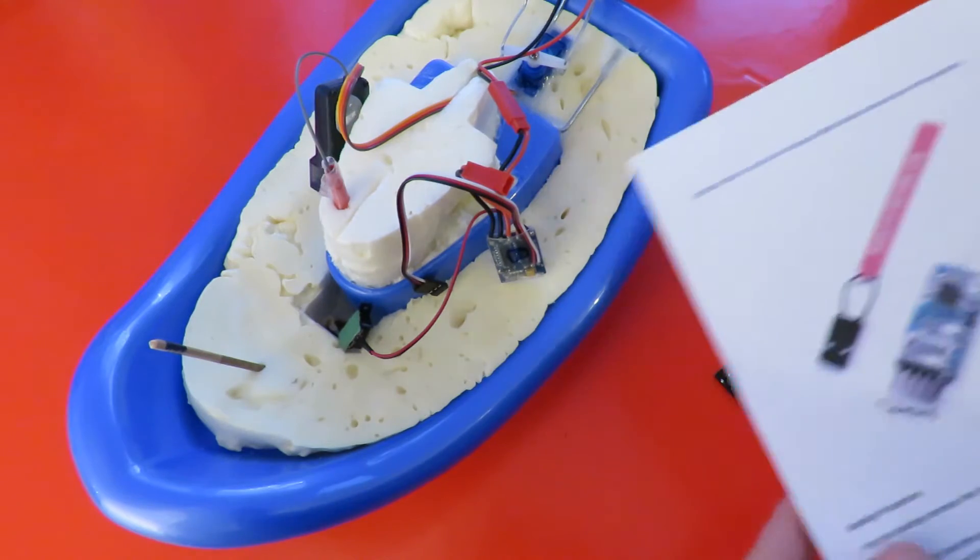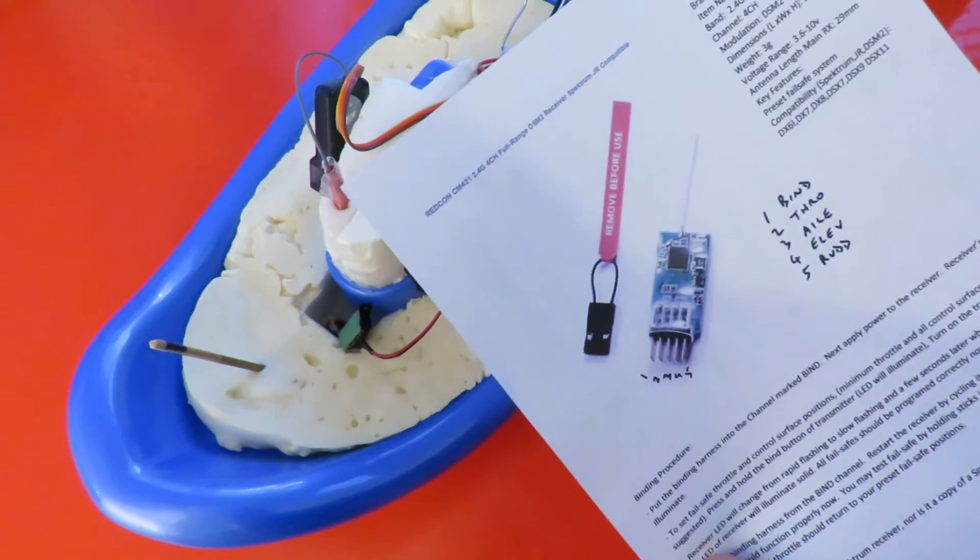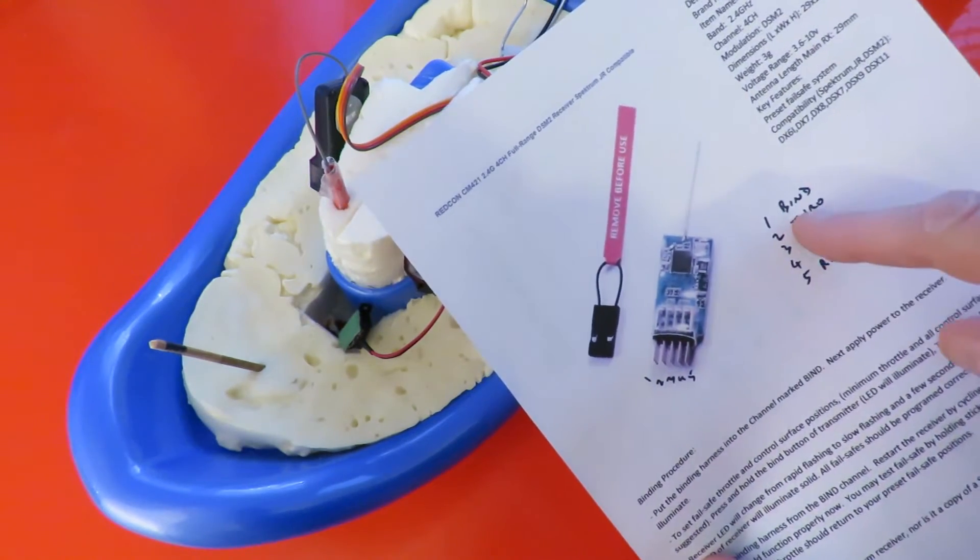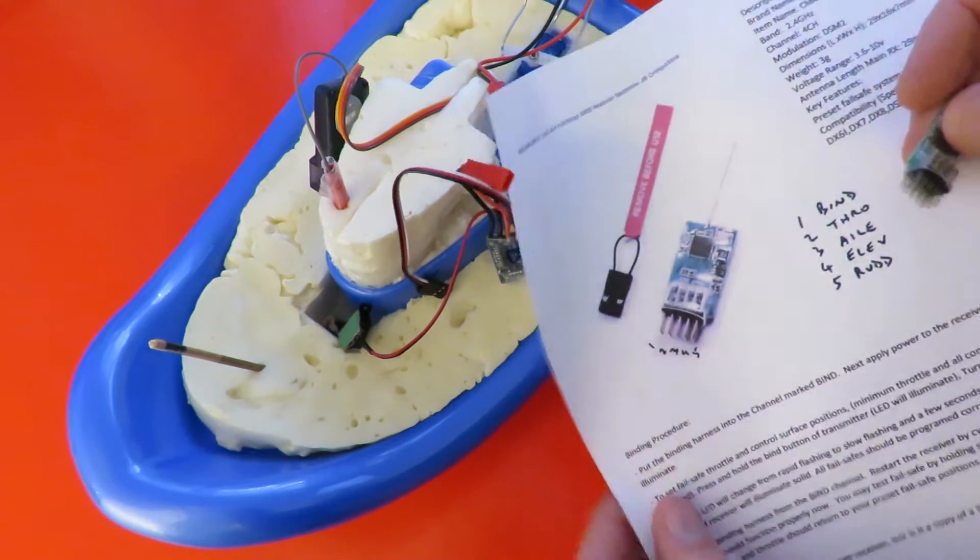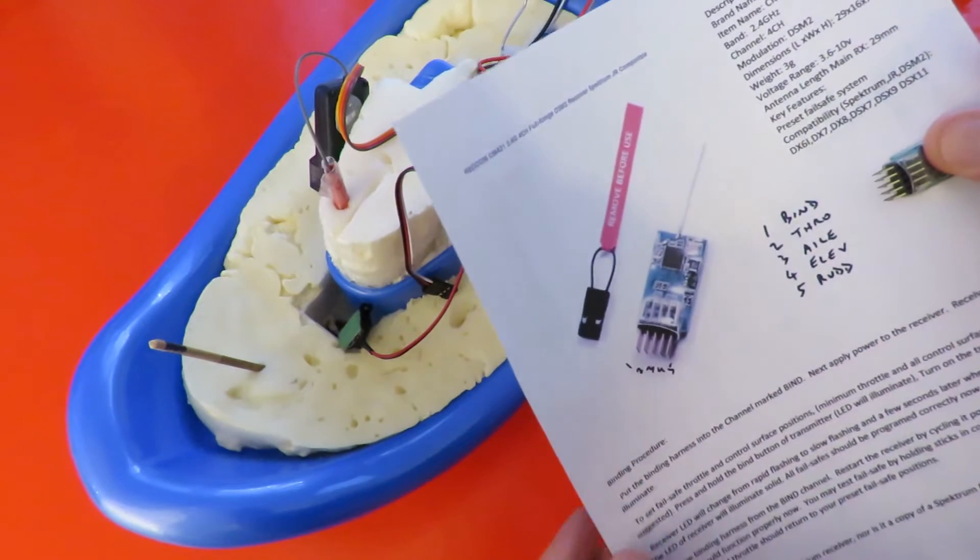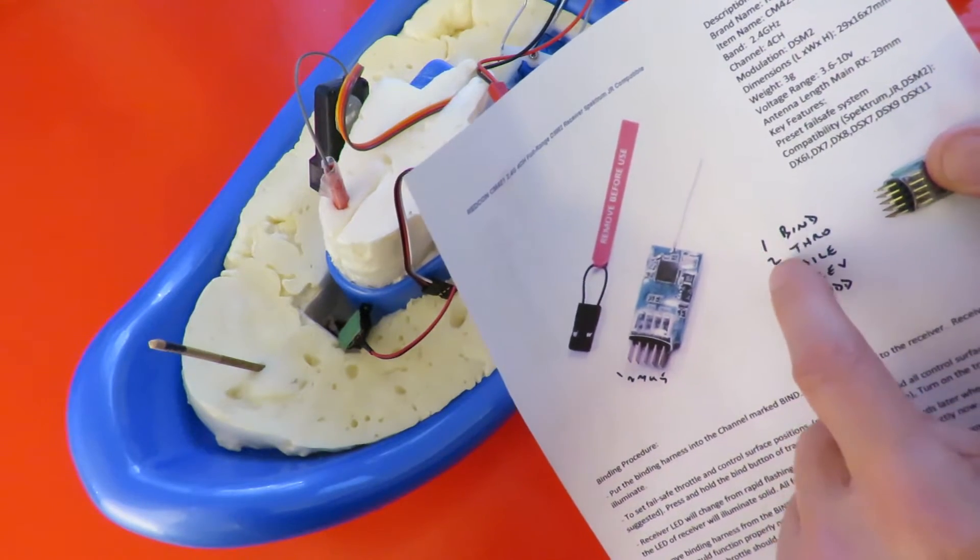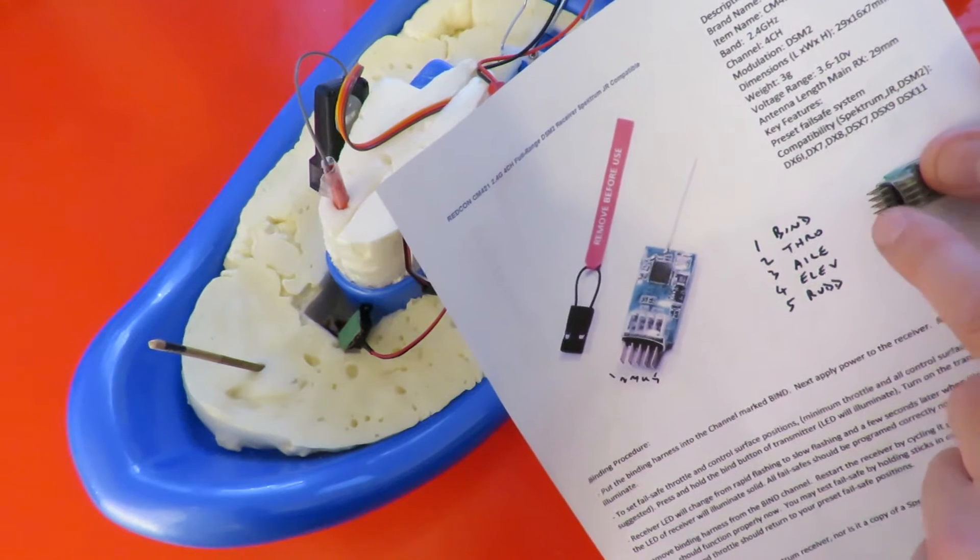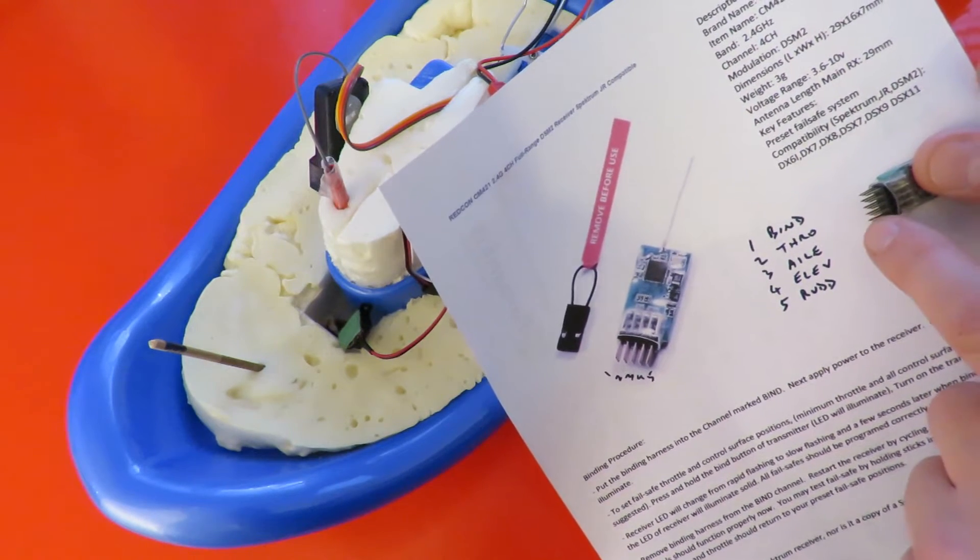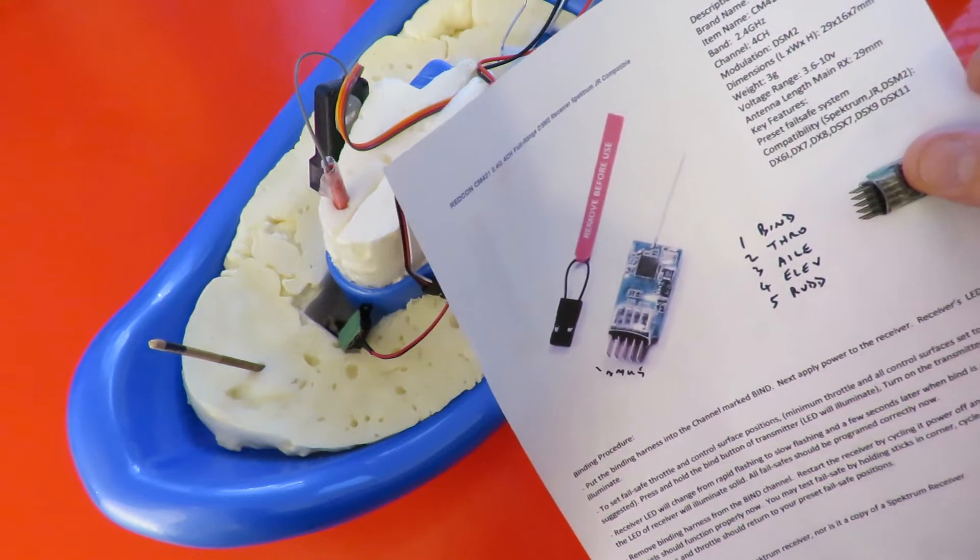Back again, I've been on the Redcon website and got the details now so holding it that way round that's the order of the pins. Top one is the bind, second one throttle, third one aileron, fourth one elevator, fifth one rudder.